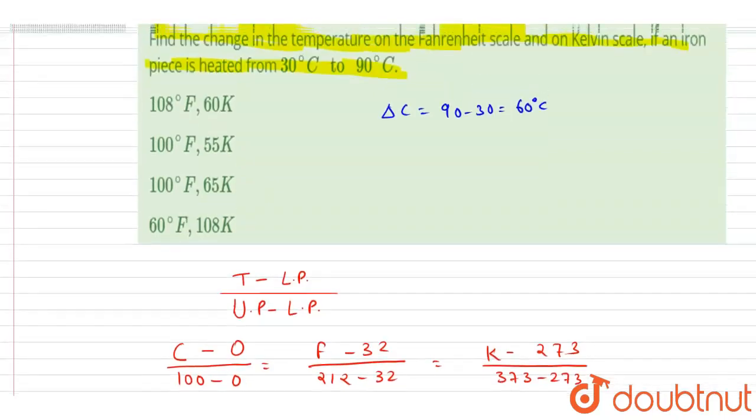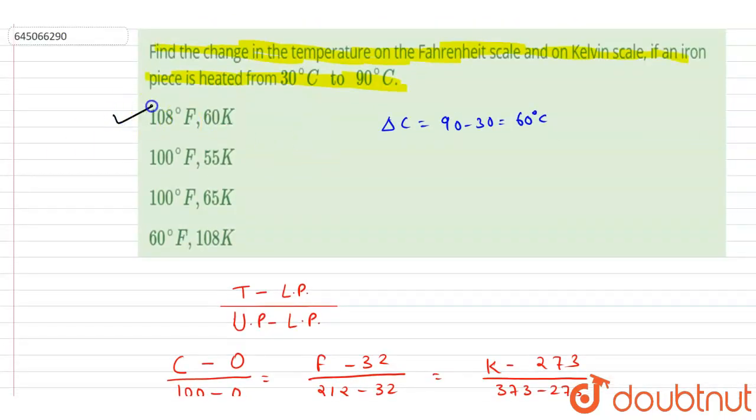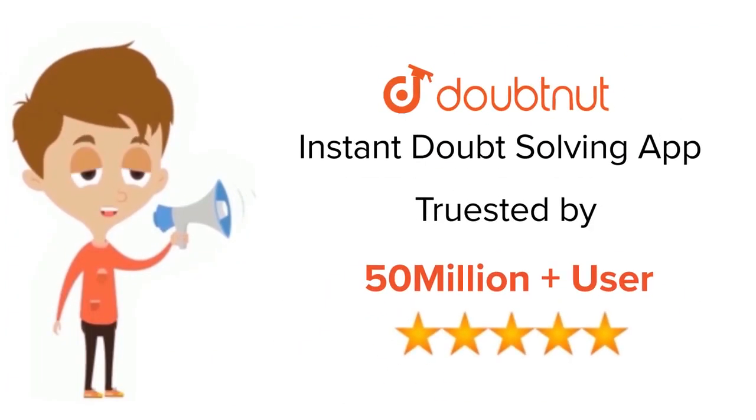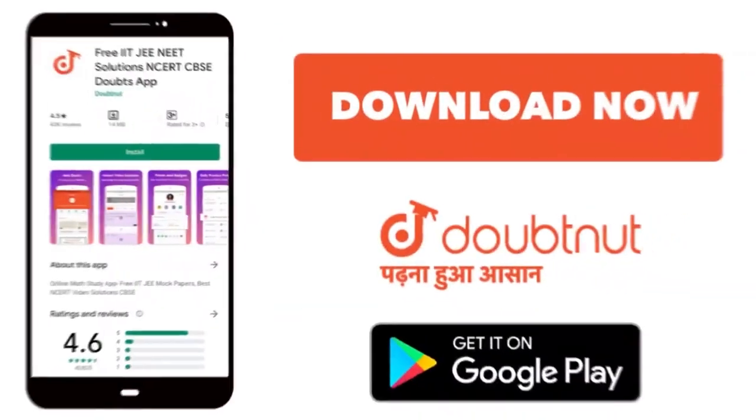Now you can check for the option: 108 and 60, so A is the correct option. Thank you. For class 6th to 12th, IIT-JEE and NEET level, trusted by more than 5 crore students, download Doubtnet app today.